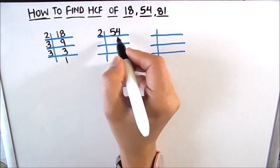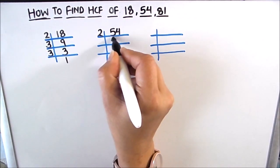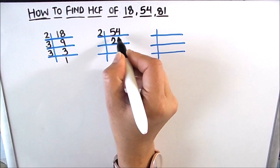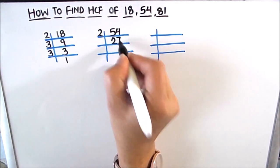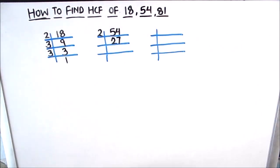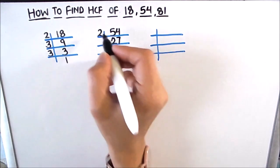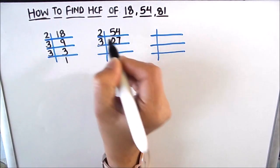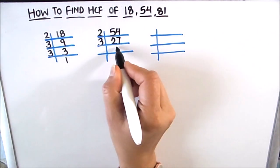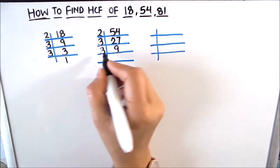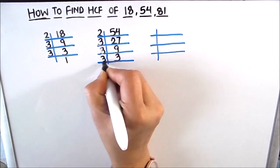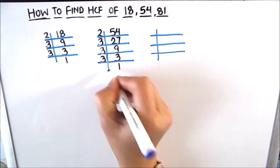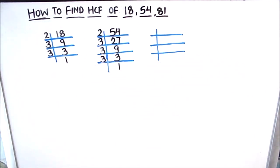Next we will find the factors of 54. It is an even number so we divide it by 2. 2 times 27 is 54. 27 is an odd number, so let's try dividing by 3. 3 times 9 is 27, 3 times 3 is 9, and 3 times 1 is 3. So 54 is also fully divided.